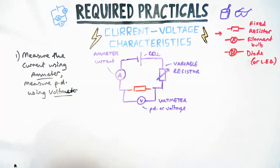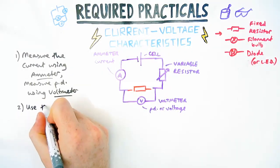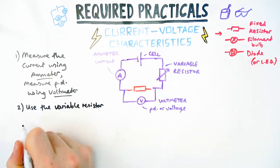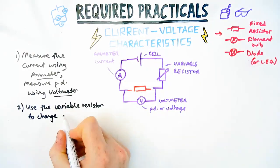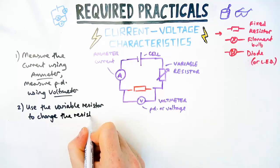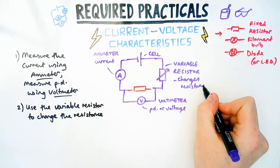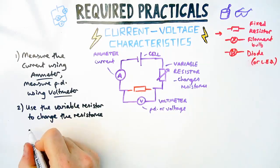Next, this is where the variable resistor comes in. We're going to use the variable resistor to change the resistance. The reason why we want to do this is because we want to get a range of values for current and PD. So the ammeter and voltmeter readings will change.